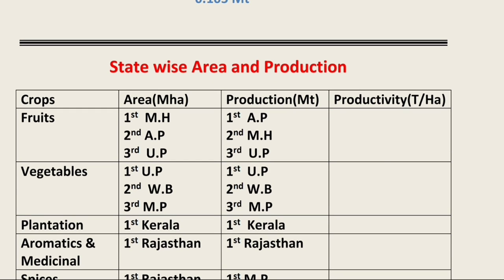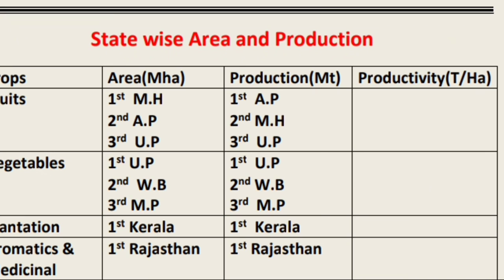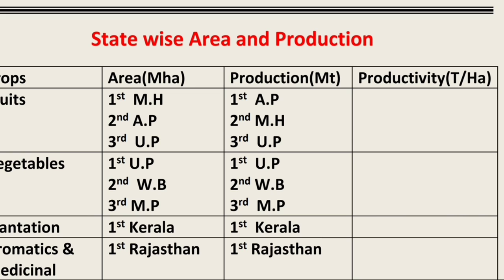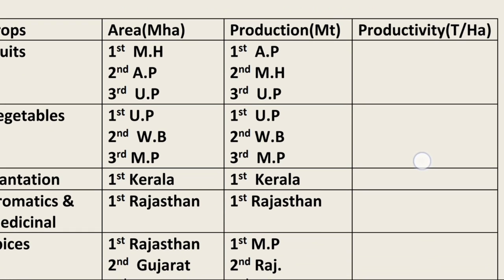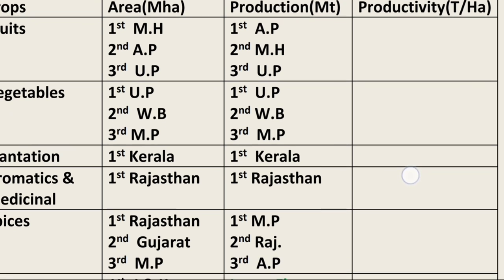Now talking about state-wise area and production of different horticultural crops. For fruit crops, the state having maximum area is Maharashtra, Andhra Pradesh is in second place, and Uttar Pradesh is third. In terms of fruit production, Andhra Pradesh holds first place. For vegetables, Uttar Pradesh has both the maximum area and maximum production.